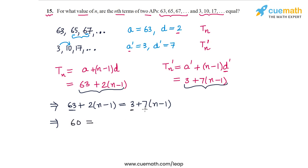And on the right side, I have 7(n-1). And if I take this term 2(n-1) on the right side, I will get 5 times (n-1). And now if I divide both sides by 5, I will get n-1 is equal to 60 by 5 or 12. And this means that n is equal to 1 plus 12 or 13.